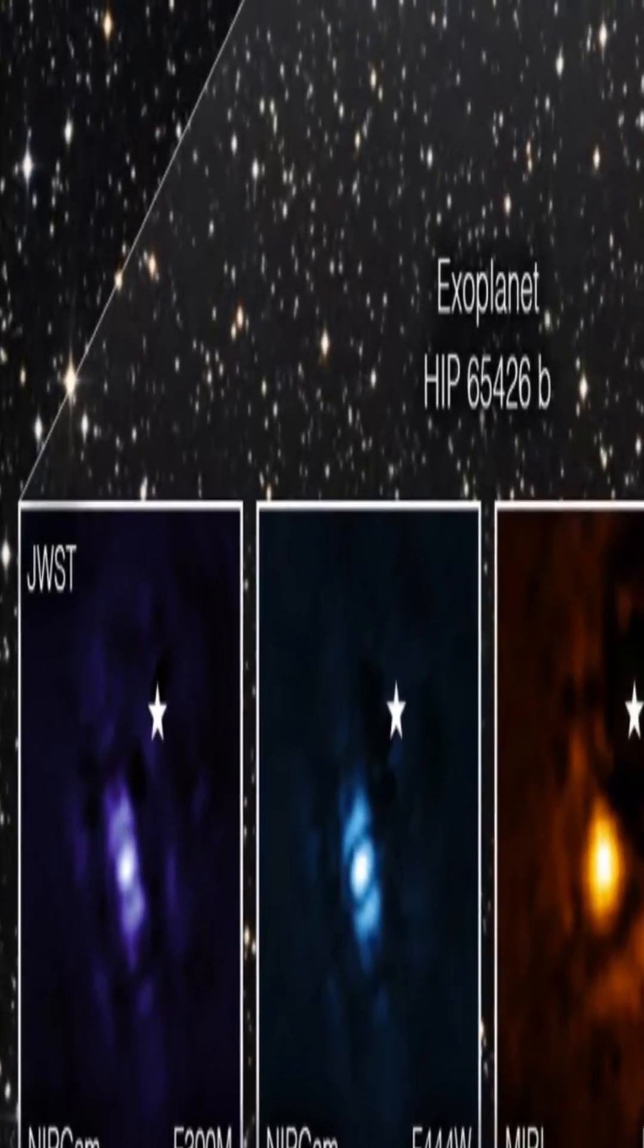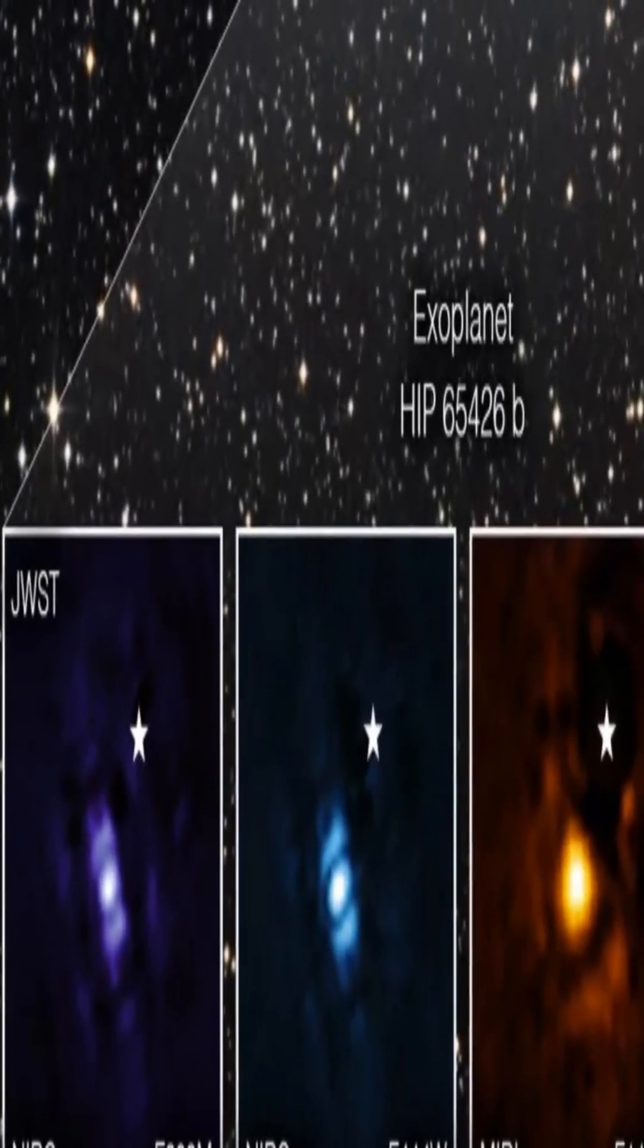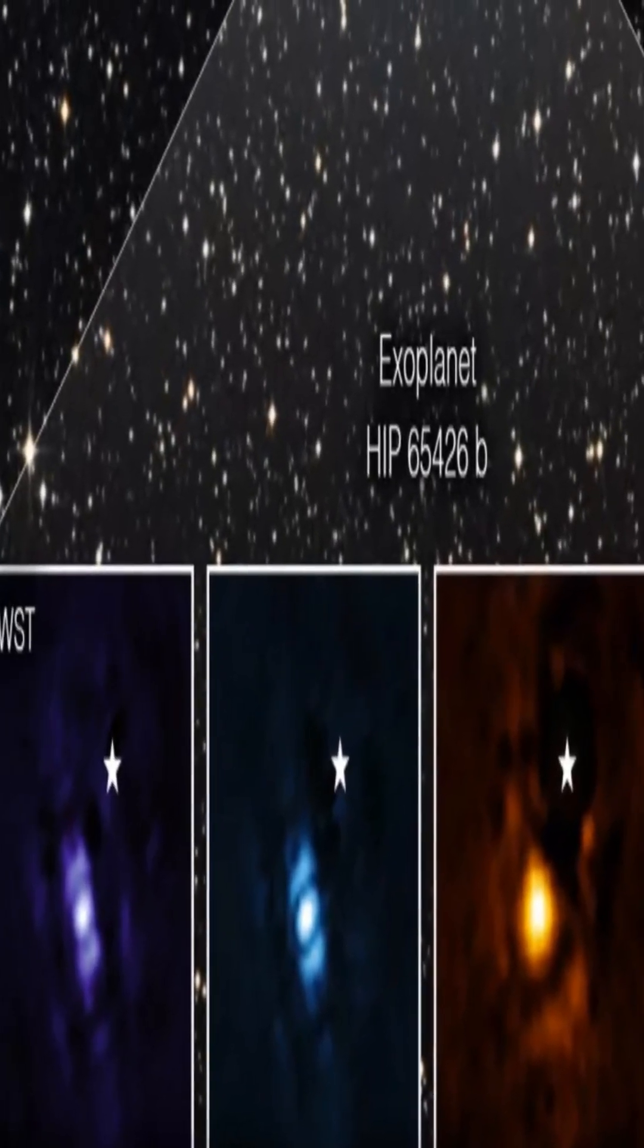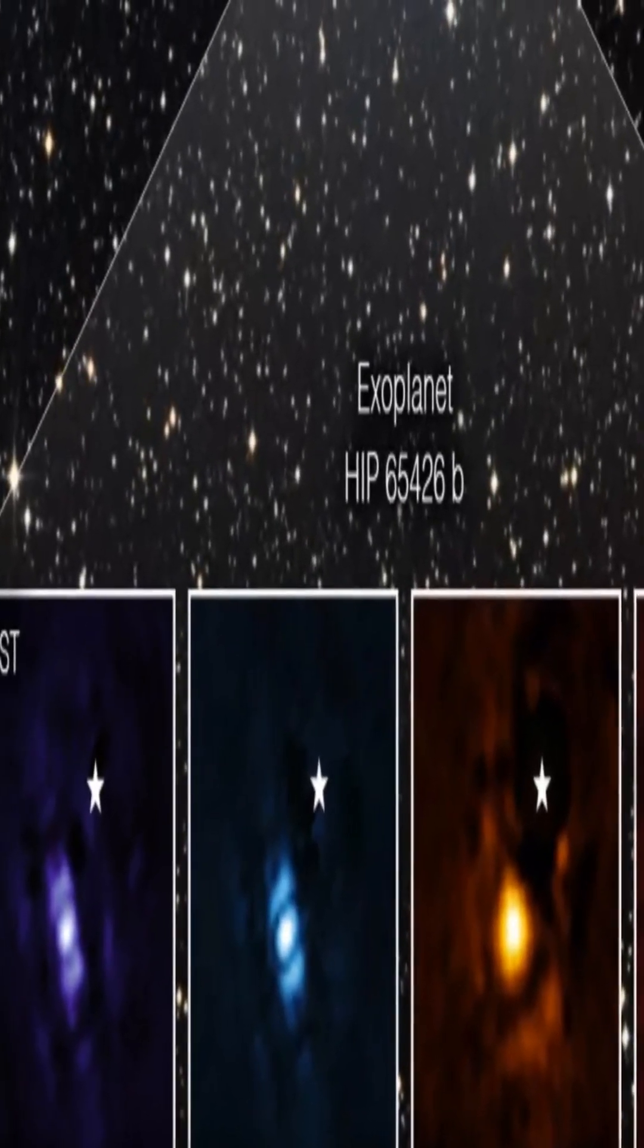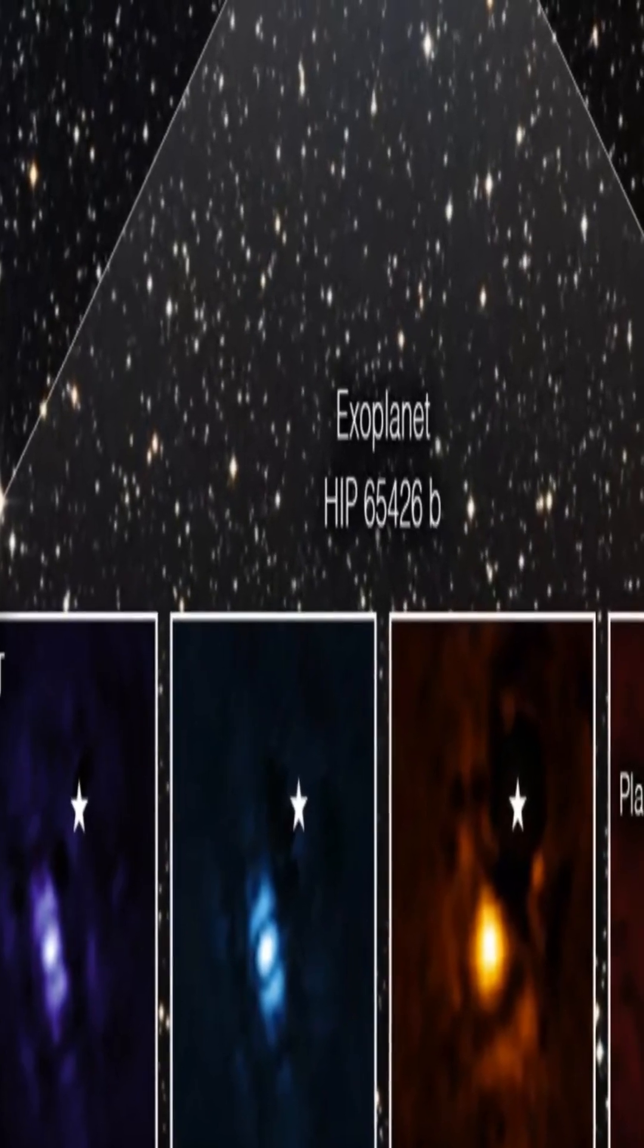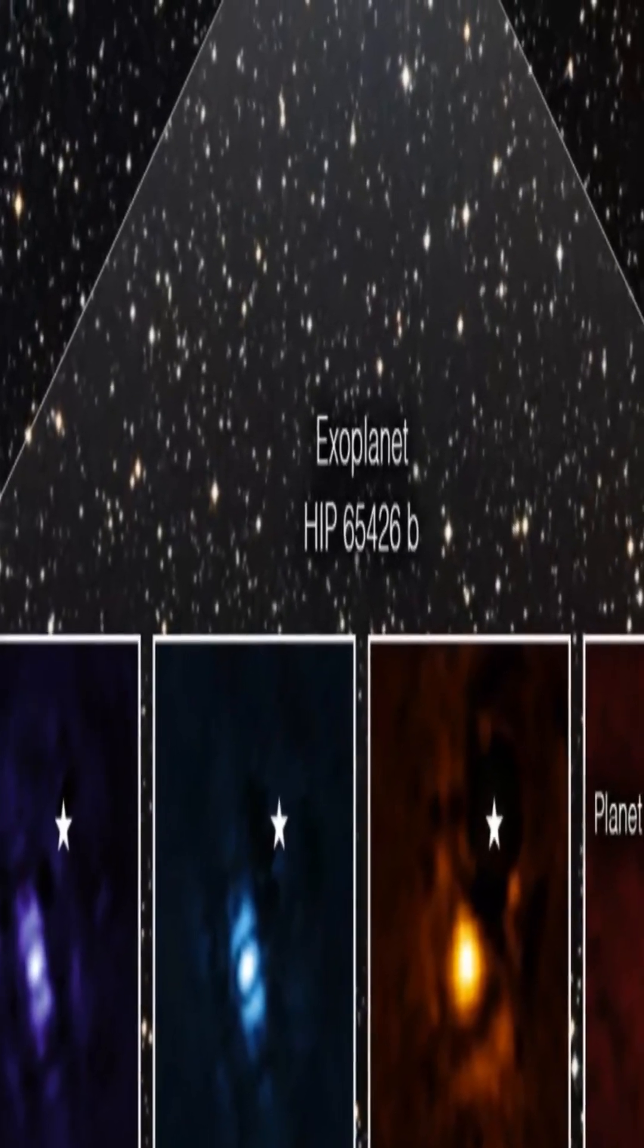The planet is visible in the image as a tiny splotch close to the glowing star. It is a gas giant that orbits the star HIP 65426, which is located 385 light years from Earth.